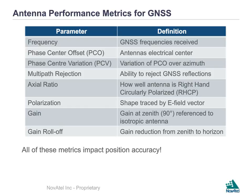We also look at multipath rejection — the ability of the antenna to reject GNSS reflections. We look at the axial ratio, which describes how well the antenna is right-hand circular polarized, especially important at lower elevations. We also rate the antenna's polarization, which is the shape traced by the electric field vector of the incoming wave. We look at gain — specifically the gain at zenith relative to an isotropic antenna — and finally, gain roll-off, which is the gain reduction from zenith to horizon, impacting low elevation tracking. All of these metrics impact position solution accuracy to varying degrees.